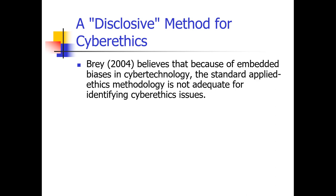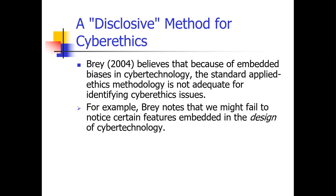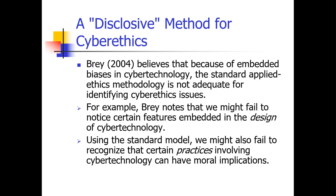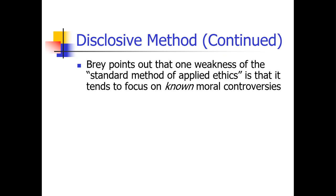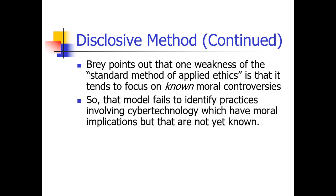So how do we disclose the method of cyber ethics? Bray believed that we have to look at cyber technology as the basis because it's embedded. The standard applied ethical methodology is not adequate for identifying cyber ethical issues. For example, Bray noted that we might fail to notice certain features embedded in the design of cyber technology using the standard model. We might also fail to recognize that certain practices involving technology might have moral implications. He also points out that one weakness of the standard method of applied ethics is that it tends to focus on known moral controversies — this has to be a known issue. A model that fails to identify practices involving cyber technology which have moral implications that are not known means the unknown portion could actually slip through.